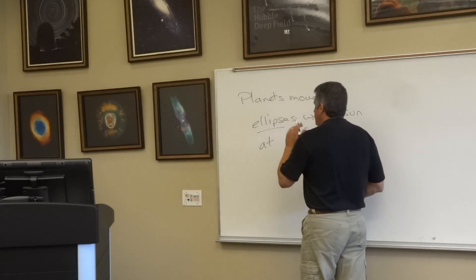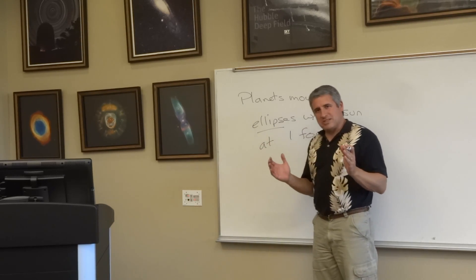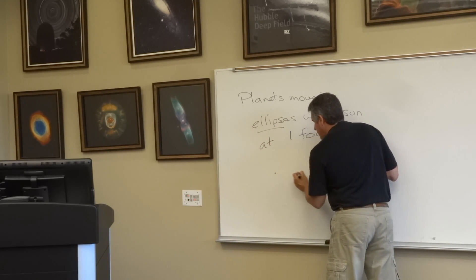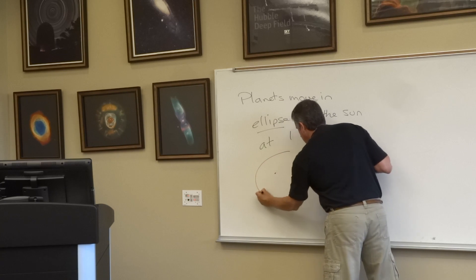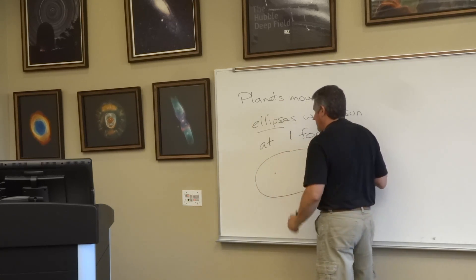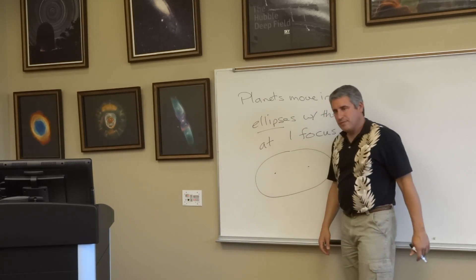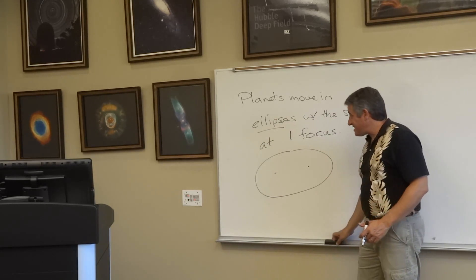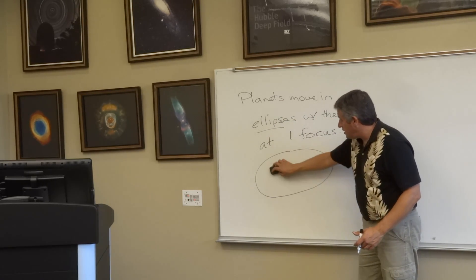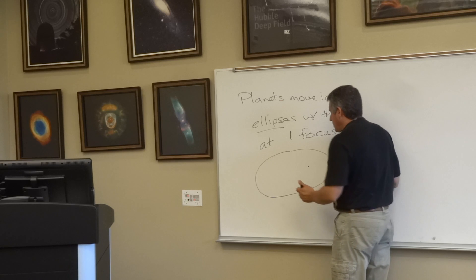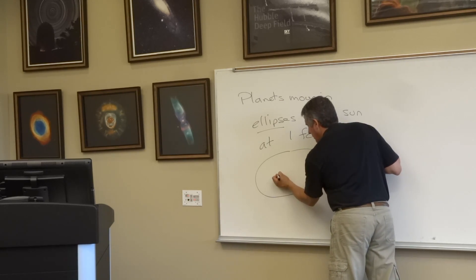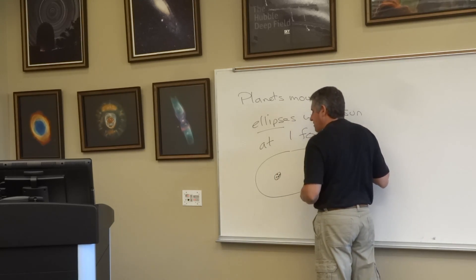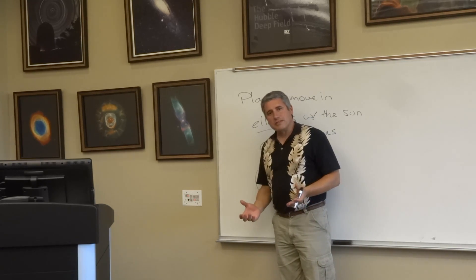So what Kepler is saying is that planets move in ellipses. If we were to draw an ellipse, we put a center here and a center there — this is the planet's orbit around the sun. Planets move in ellipses and the sun sits at one of the foci. So here's the sun. Planets move in elliptical orbits.